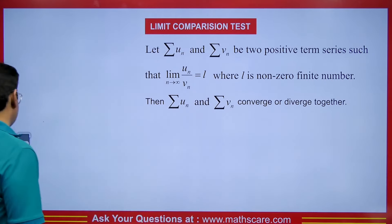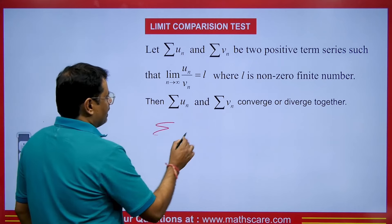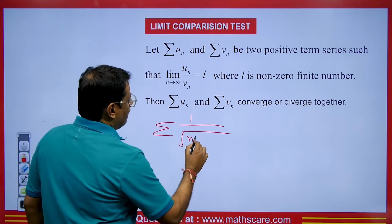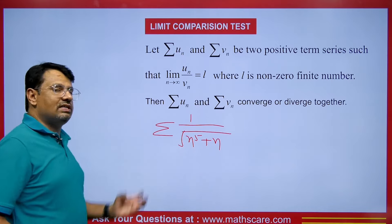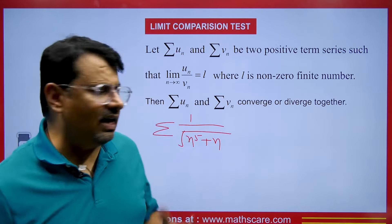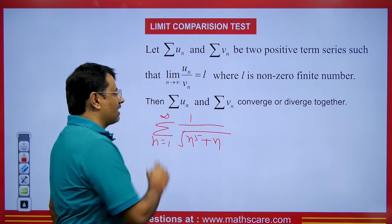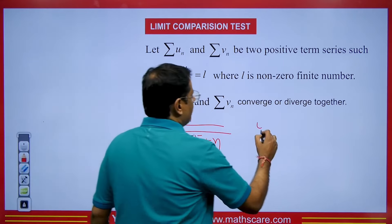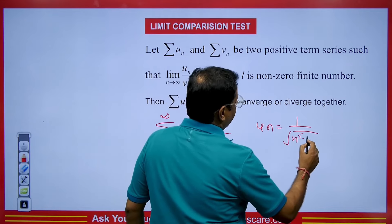Now we will discuss the type of questions that are often asked. Let's say we have the series with un equal to 1 upon the square root of n to the power 5 plus n, going from n equals 1 to infinity. We have to figure out whether this series is convergent or not.